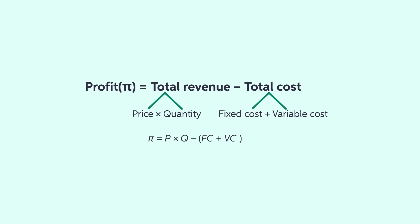Profit is the excess revenue a firm makes after accounting for the cost of production. As a formula, profit is represented by the Greek symbol π and is equal to total revenues minus total cost.